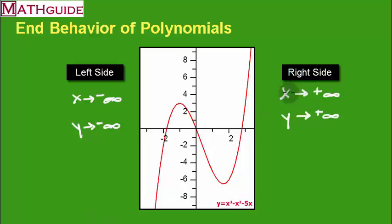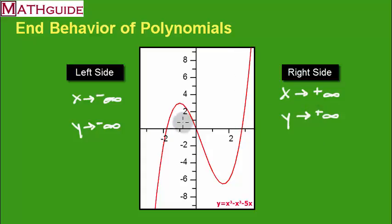You'll notice that on the right side, x is always going to be positive infinity, and on the left side, x is always going to be negative infinity. Those things are never going to change. It's just a matter of what's happening to the y values — are they going up to positive infinity, or going down to negative infinity? It's just a matter of looking at which way the curve is going.